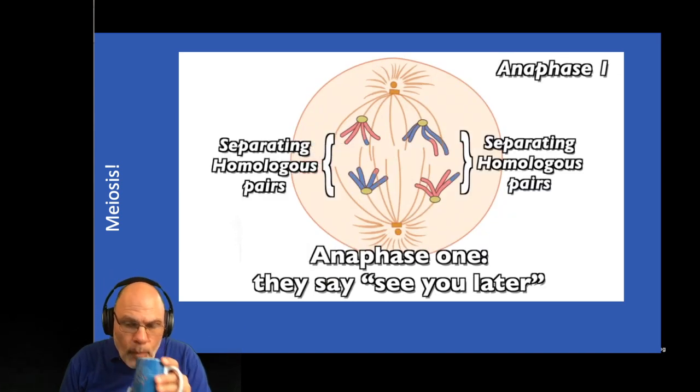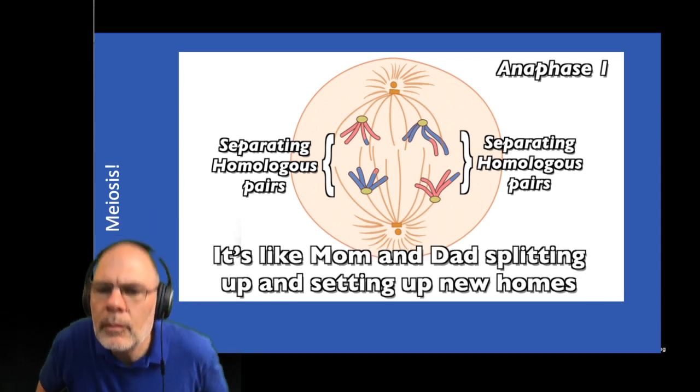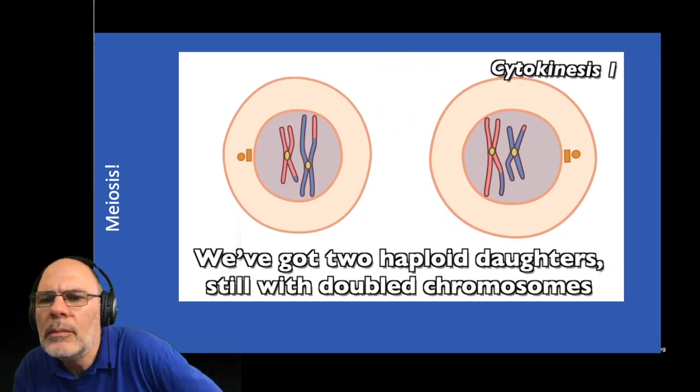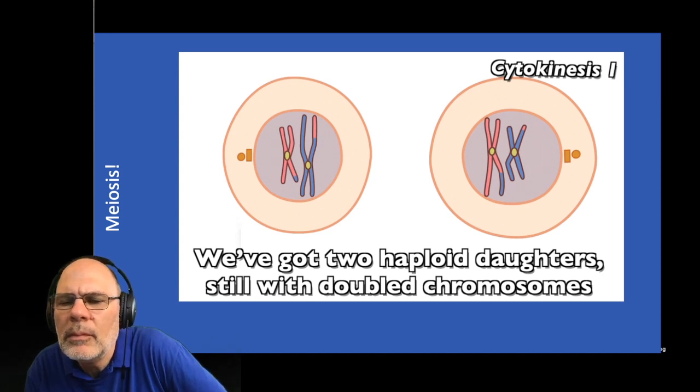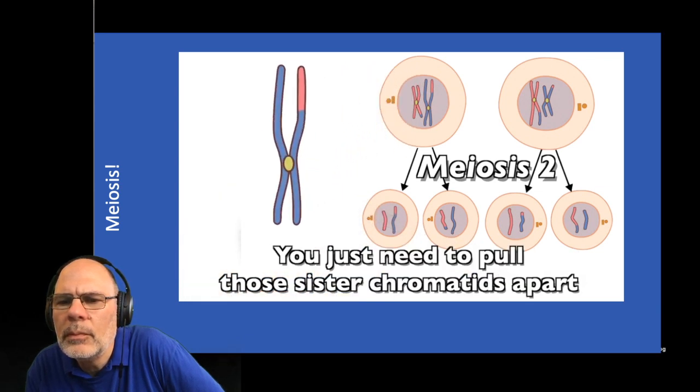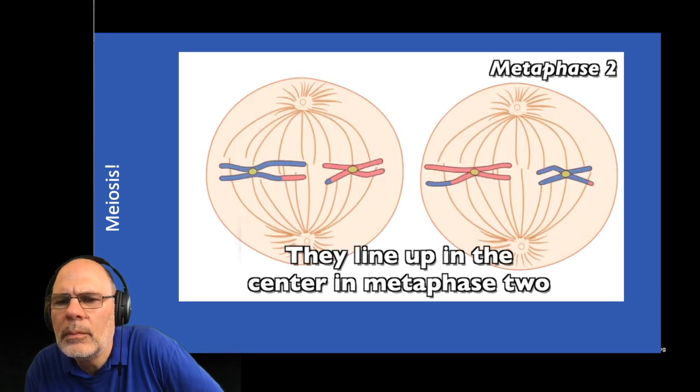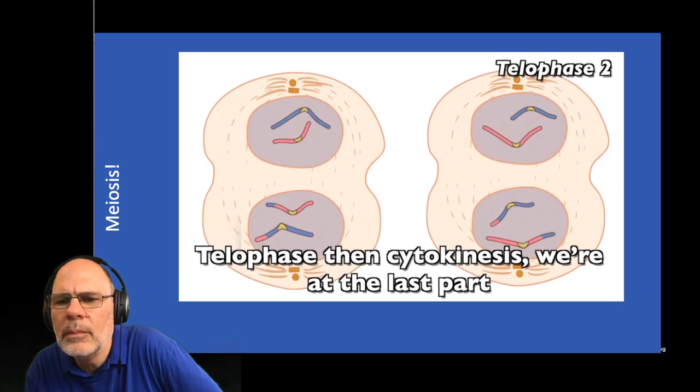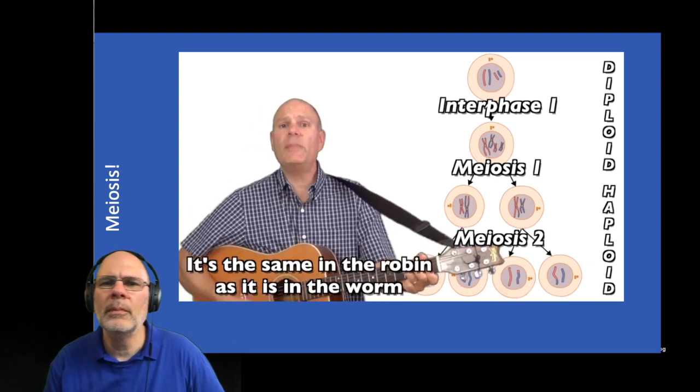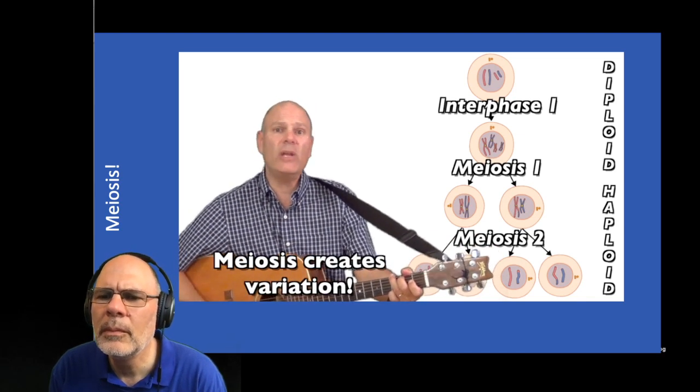Metaphase one, homologues to the equator. Anaphase one, they say see you later. It's like mom and dad splitting up and setting up new homes. Two nuclei form in telophase one, then cytokinesis. Meiosis one is done. We've got two haploid daughters still with doubled chromosomes. Now things are much simpler in part two of meiosis. Essentially, it's just like mitosis. You just need to pull those sister chromatids apart. They line up in the center in metaphase two, anaphase pulls them apart. We're almost through. Telophase, then cytokinesis. We're at the last part.